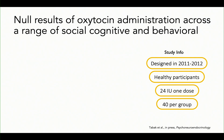We thought this was a great opportunity to apply both of these techniques to a series of studies we had conducted several years earlier when I was at UCLA. This is a study designed in 2011-2012. Things are a lot different now in this field. It was a study in healthy participants, and we used 24 international units because everyone else did. We had 40 people per group and also had a vasopressin arm, but today I'll just tell you about the oxytocin results.